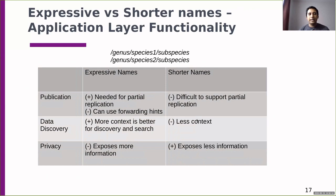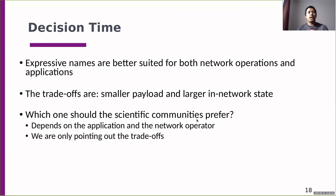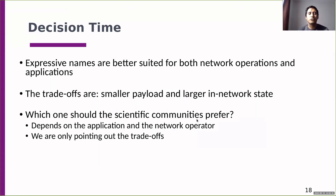For data discovery, more context is always better, both for indexing, discovery, and search. The downside is privacy — we expose more information with longer names. The takeaway: expressive names are better suited both for network operations and applications. The trade-offs are smaller payload and larger in-network state. Which ones should communities prefer? It depends on the application and the network operators. Our job in this work is only to point out the trade-offs.